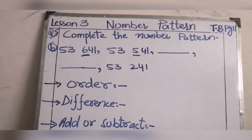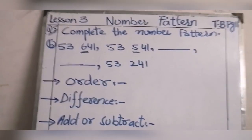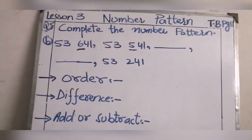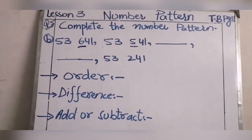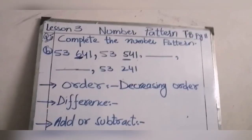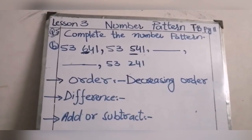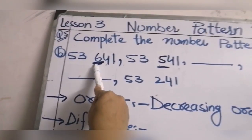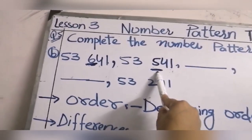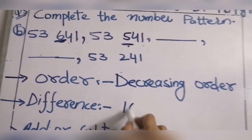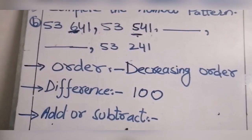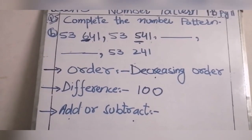First we find the order, second we find the difference, third we determine whether we add or subtract. At the hundreds place we have 6, then 5 — so the difference is 100. Now the third step: since the numbers are in decreasing order, we subtract 100.